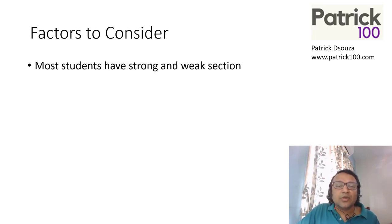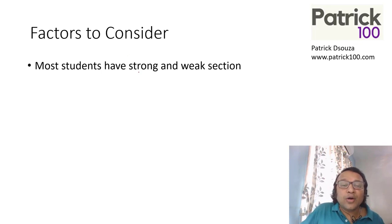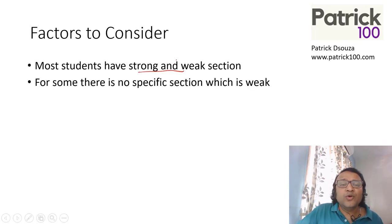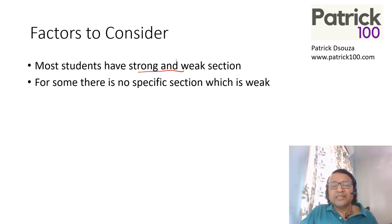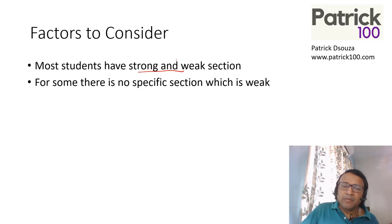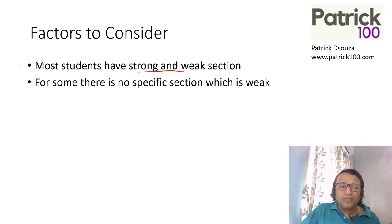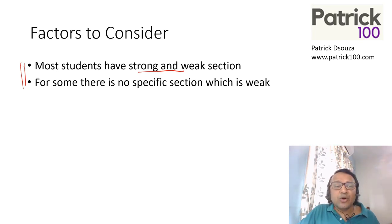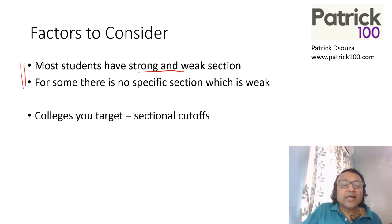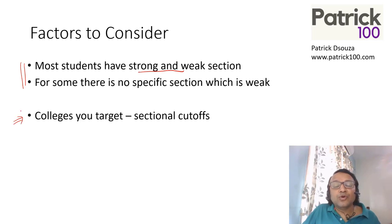I look at two major factors. One is either students have a strong or weak area, or they do not. There are a lot of students who don't have any very specific section which is weak — they may perform well in one section, one paper, or some other section, some other paper. The second factor is the college you target, which will also determine whether you focus on weak or strong area.